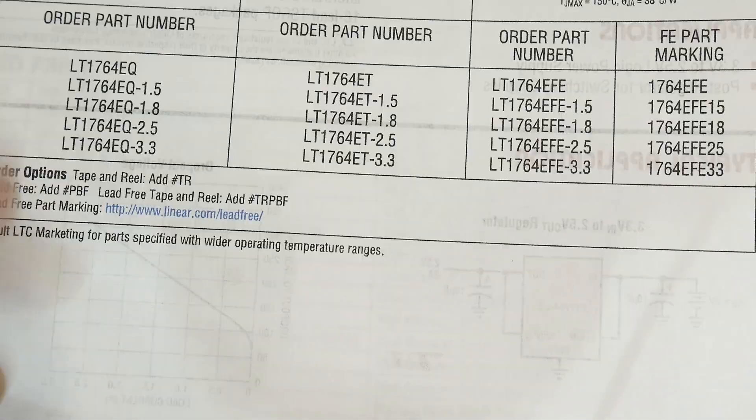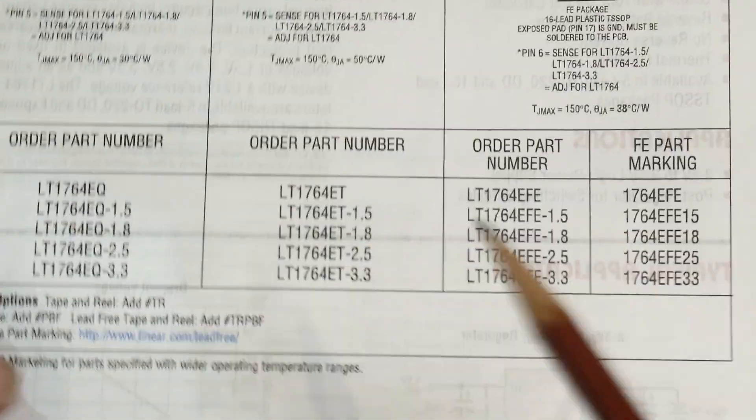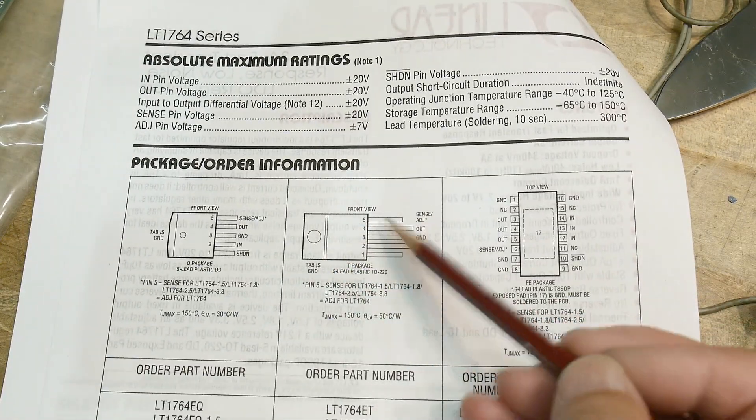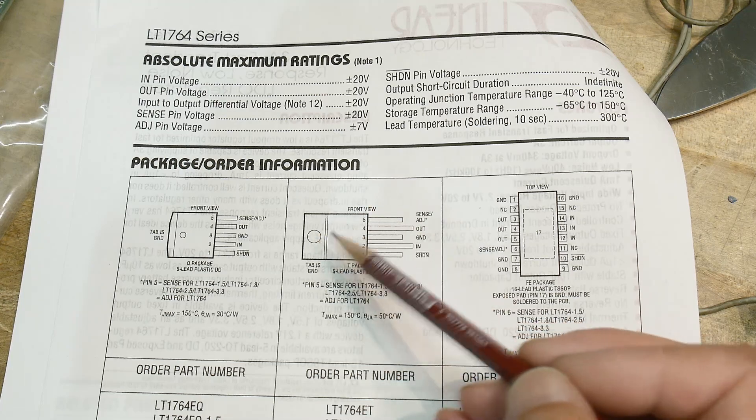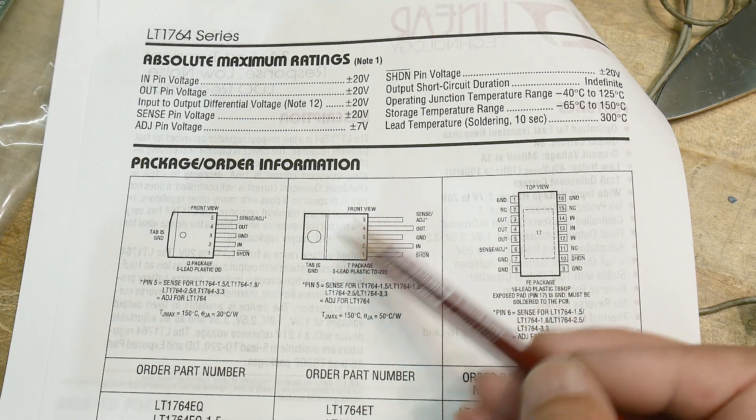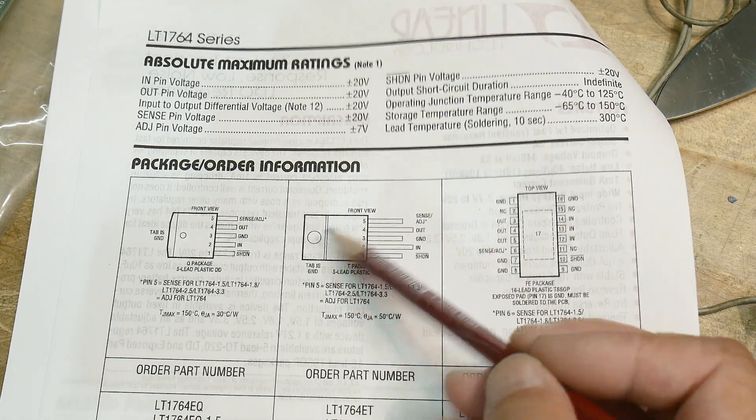Now if I were going to buy these things and keep a bunch of them, I would want to get this package. It's like a TO-220 but with five pins. And this would give you that full 3 amps, be able to hook it up to a heat sink and everything. That'd be great.